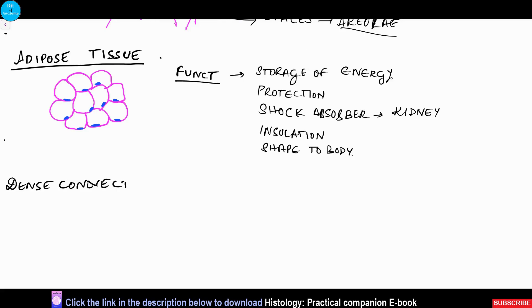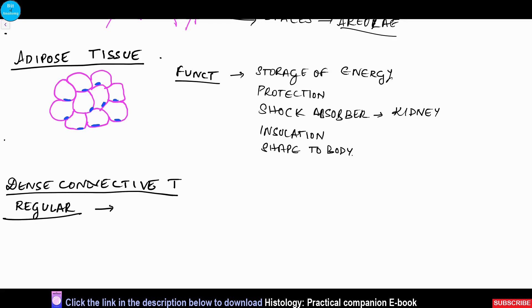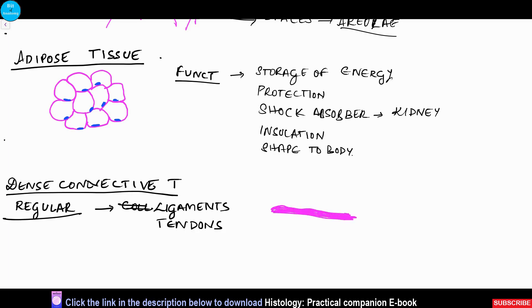Next is dense connective tissue, which can be regular or irregular. In the regular type we see ligaments, tendons, raphae, fascia, and aponeurosis, which contain thick amounts of collagen fibers with the nuclei of fibroblasts and fibrocytes in between. Regularly arranged collagen fibers are the characteristic feature of this type.